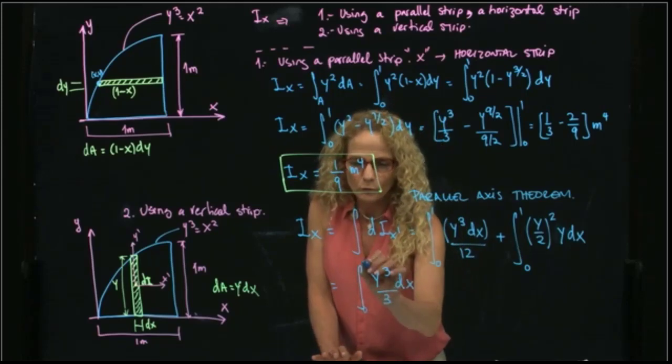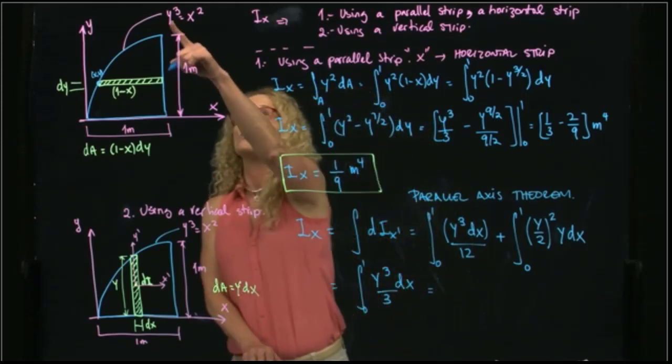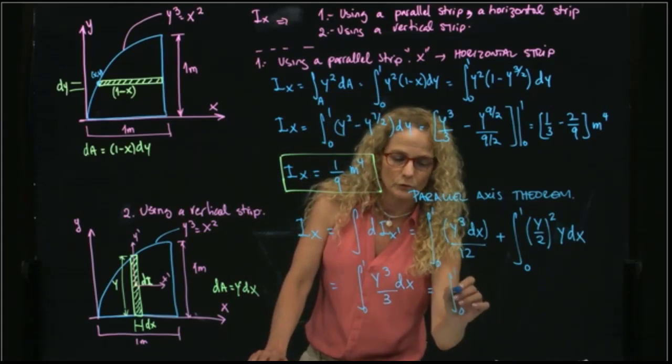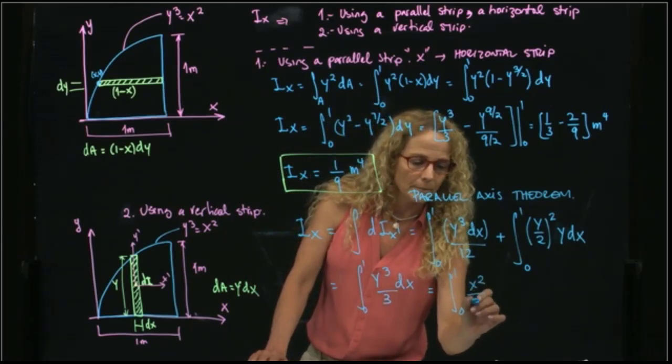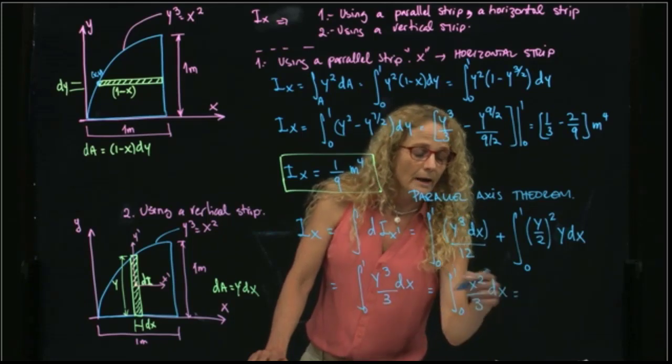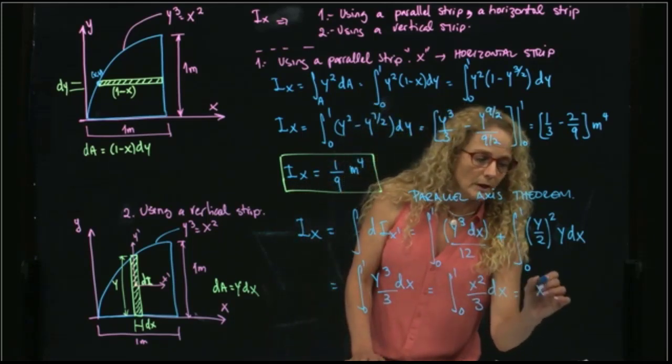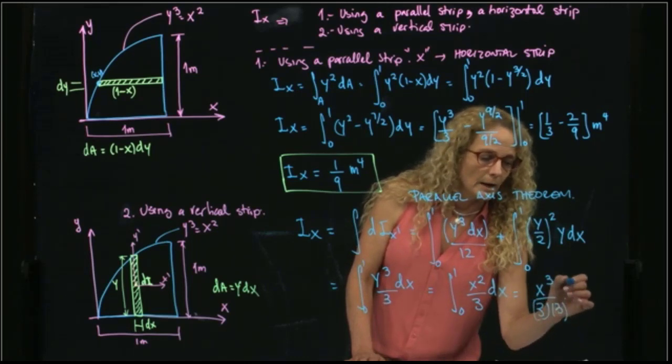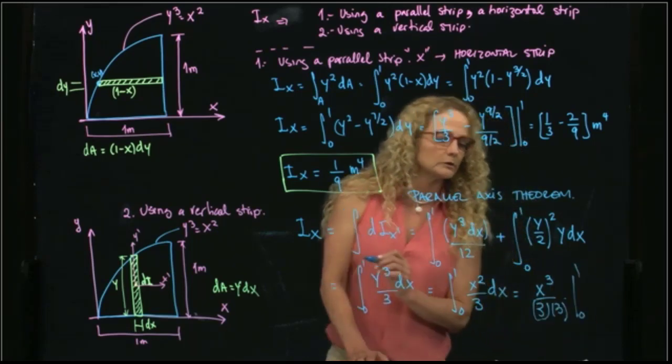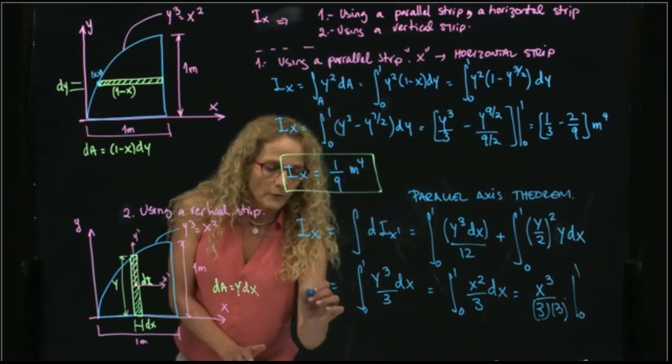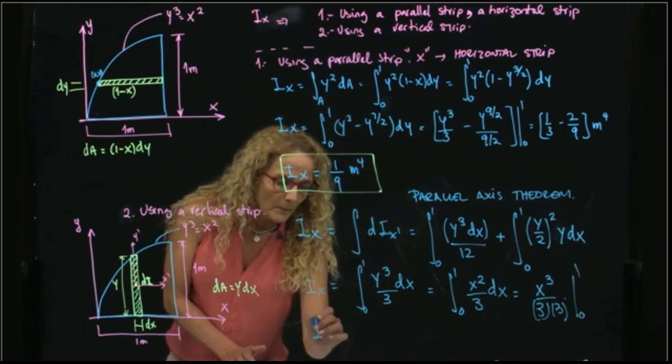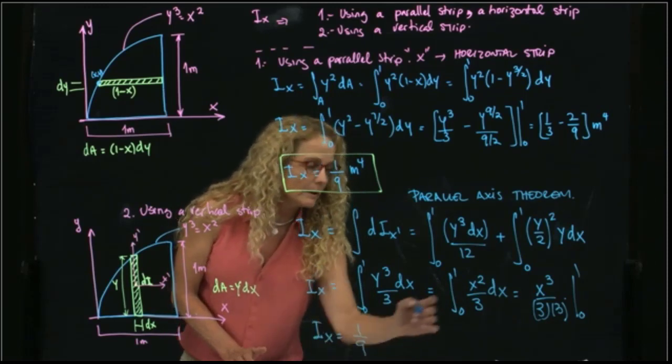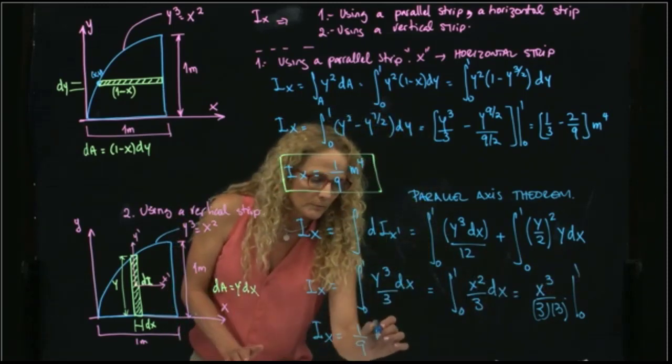From 0 to 1. I can substitute y cubed is equals to x squared. Therefore, this is from 0 to 1, x squared divided by 3 dx. And this is a very easy integral. x cubed over 3 times 3. And the limit of integration is 0 to 1. Therefore, my Ix is equals to 1 over 9. And since this is meters, meters to the fourth.